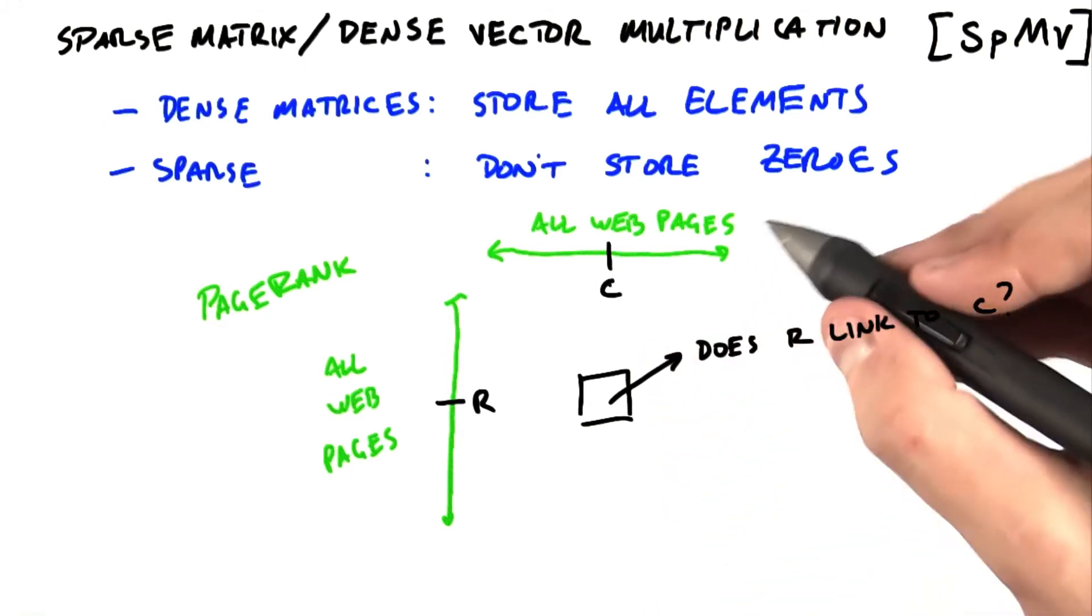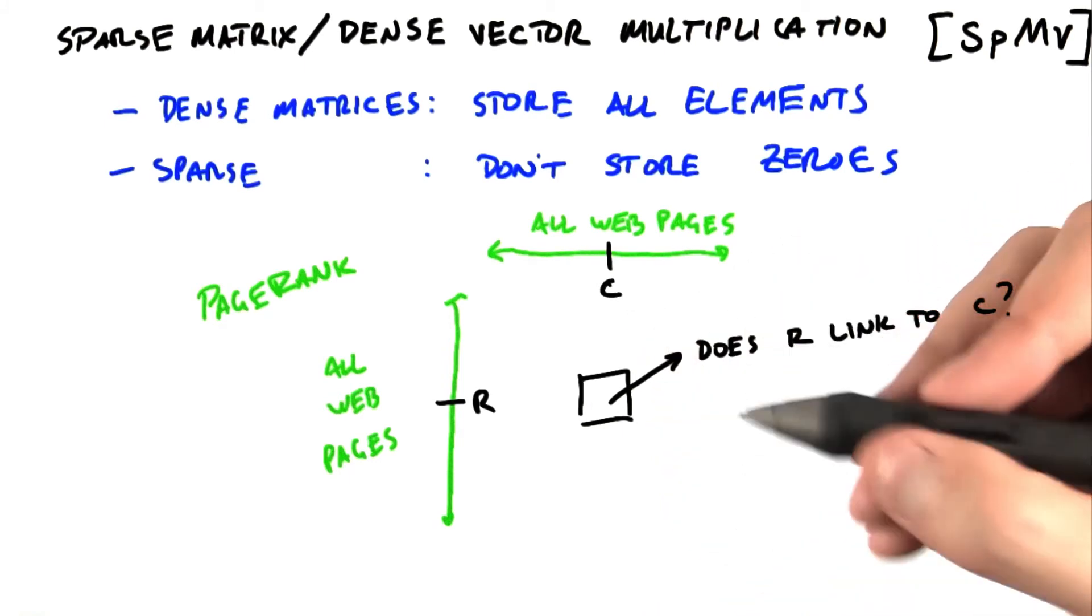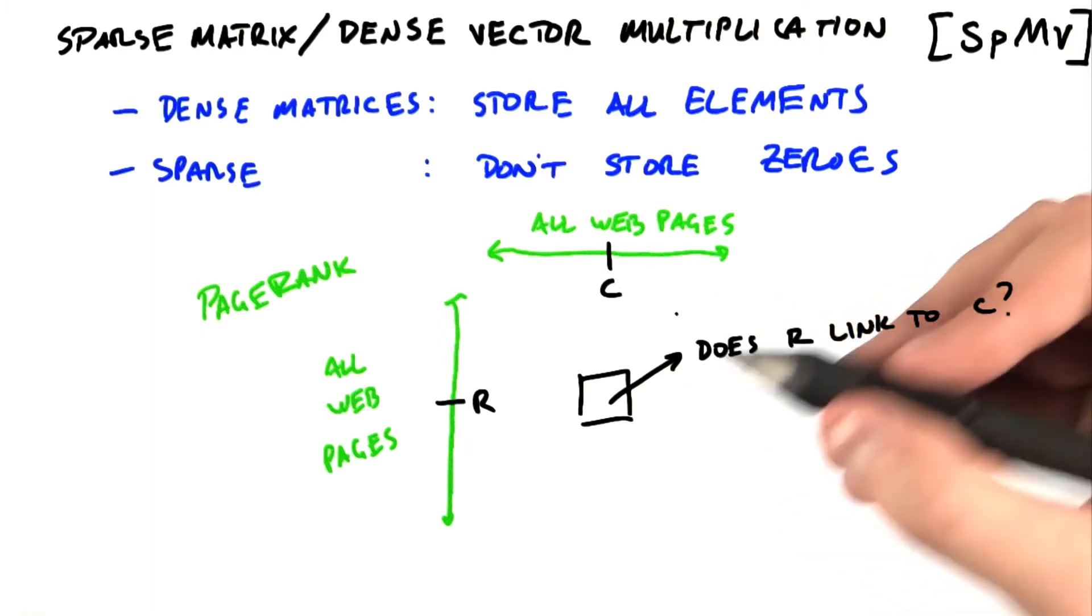So the PageRank computation on this sparse matrix is how Google computes the importance of web pages.